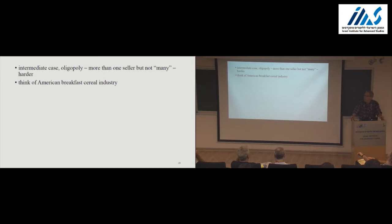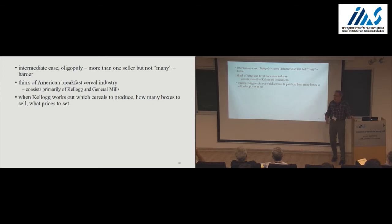But let's think of an industry where there are only a few sellers, or at least only a few sellers that have a big effect. The breakfast cereal industry in the U.S. has been such an example. If I've got this right, there are basically two big players in that industry: Kellogg's and General Mills. And the point is that when Kellogg's is figuring out what it's going to do, which cereals it's going to produce, how many units of each to sell, what prices to set, it has to make some guesses about what General Mills will do, and vice versa.